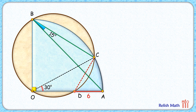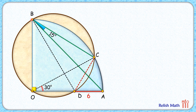Now let's join CD. CD is also a chord, but with respect to this brown circle. The CD chord subtends an angle of 30 degrees at the circumference, and thus by the theorem it will subtend an angle of 30 degrees everywhere on the remaining part of the circumference — at point B as well. So this angle here is 30 degrees, and thus this remaining angle is 30 minus 15, which is 15 degrees.